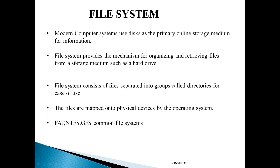File system is a concept which provides a mechanism for organization of the data stored in secondary storage devices like a hard drive or disk drive. It also provides mechanisms for retrieving files from the disk. Without a file system, files on the disk will not have proper organization, and we can't even have two files with the same names. The file system helps us organize and search for files on the disk.